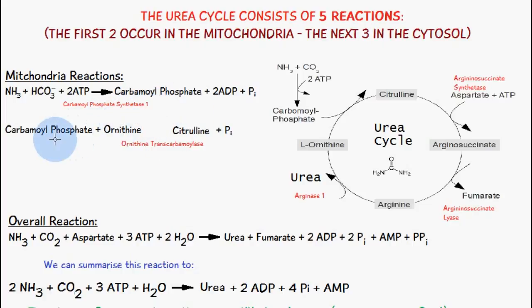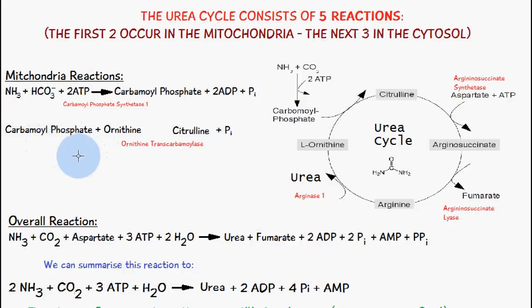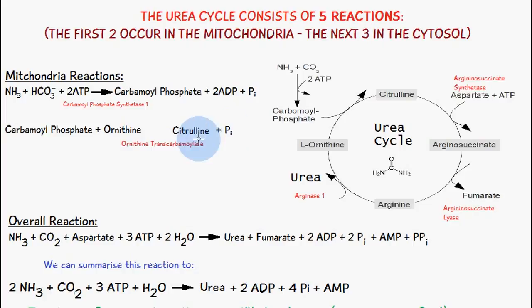The second reaction also occurs in the mitochondria. Carbamoyl phosphate combines with ornithine to give citrulline and one inorganic phosphate. The enzyme catalyzing this reaction is ornithine transcarbamoylase.